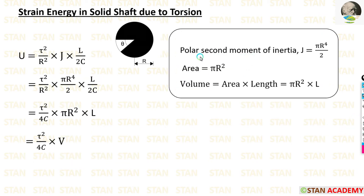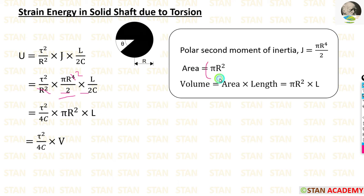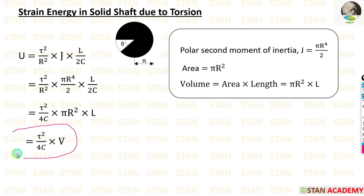For a solid shaft, the polar second moment of inertia formula is pi·r to the power 4 by 2. Applying this, we can cancel r squared with r to the power 4, leaving r squared, and 2 into 2 gives 4. Finally, we get tau squared by 4c into pi·r squared into l. In the solid shaft, the area formula is pi·r squared, and volume is equal to area into length, so pi·r squared into l equals V. This is the expression for the strain energy in a solid shaft due to torsion.